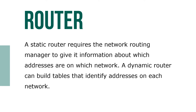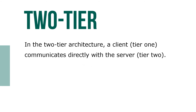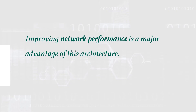A static router requires the networking routing manager to provide information about which addresses are on which network, while a dynamic router can build tables that identify addresses on each network. In the client-server model, software runs on the local computer (the client) and communicates with the remote server to request information or services. In two-tier architecture, the client (tier one) communicates directly with the server (tier two). An n-tier architecture attempts to balance the workload between client and server by removing application processing from both and placing it on a middle-tier server, with improving network performance being a major advantage.